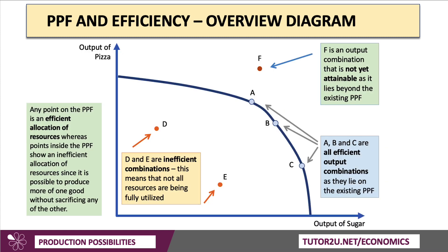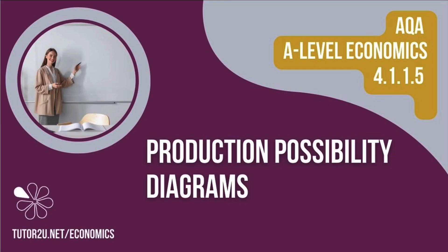Here's a quick overview of the PPF diagram. Any point that lies within the curve — D and E, for example — represents inefficient combinations where we're not fully or efficiently utilising our scarce factor inputs. Points that lie on the curve — A, B and C — represent productive efficiency. But point F is a combination not yet attainable, as it lies beyond the existing PPF. This was an AQA micro video on production possibility diagrams — thanks for joining in.